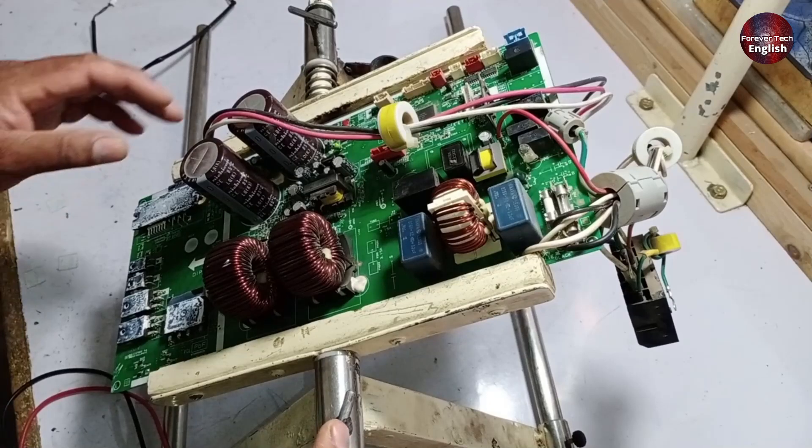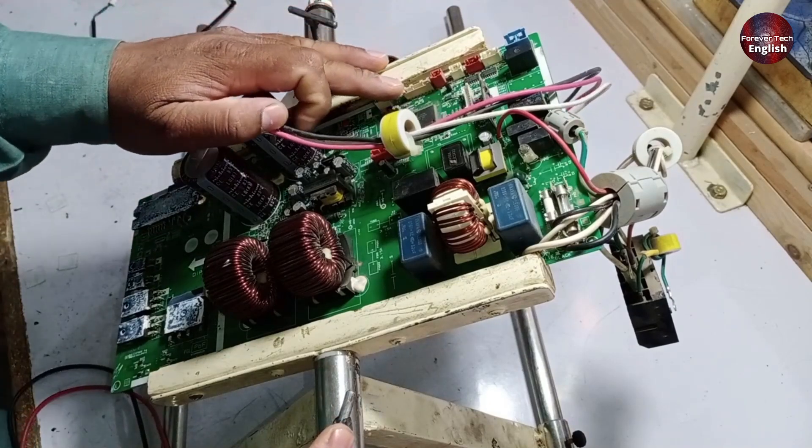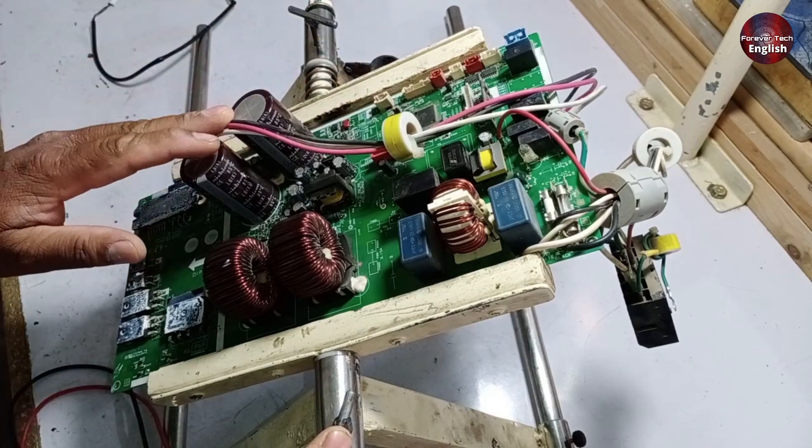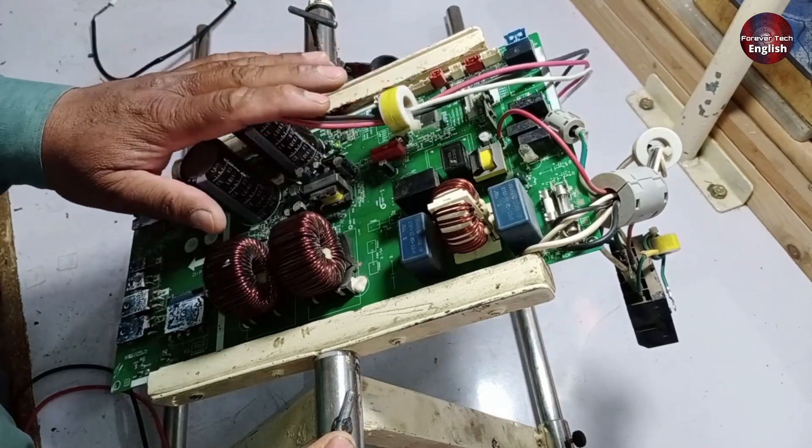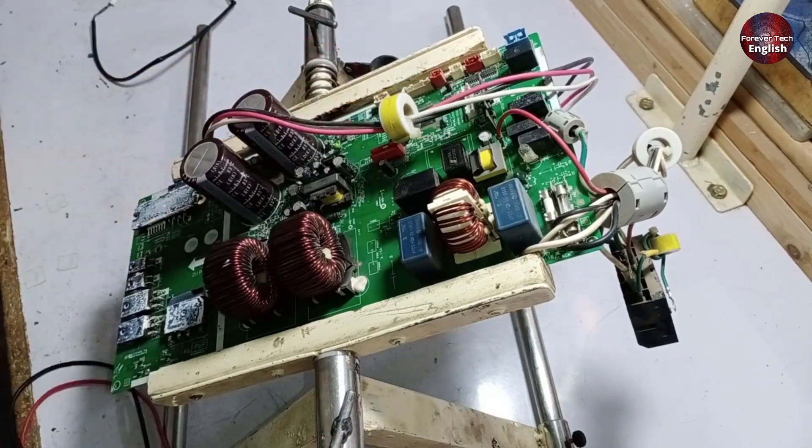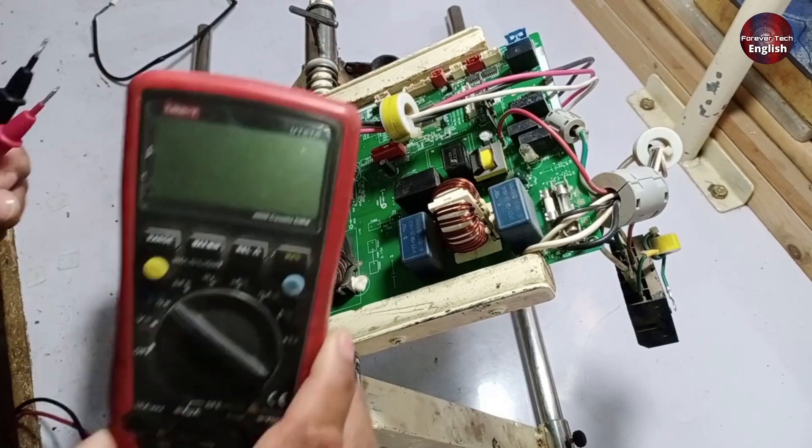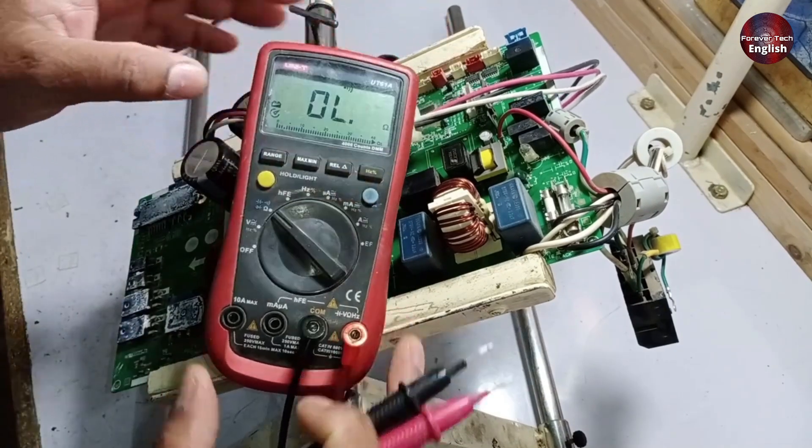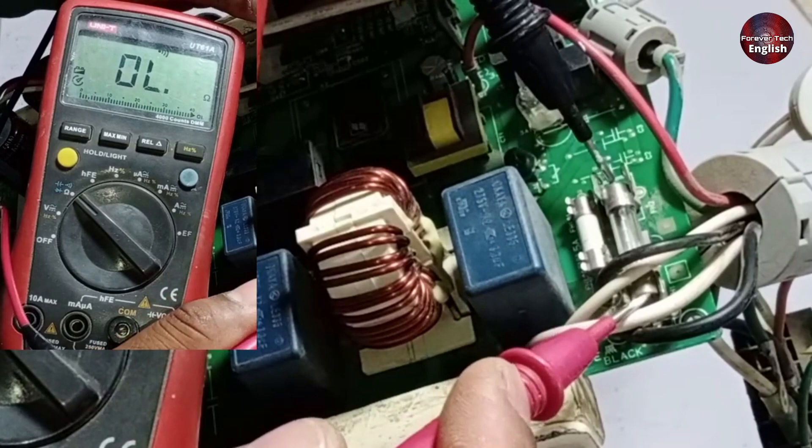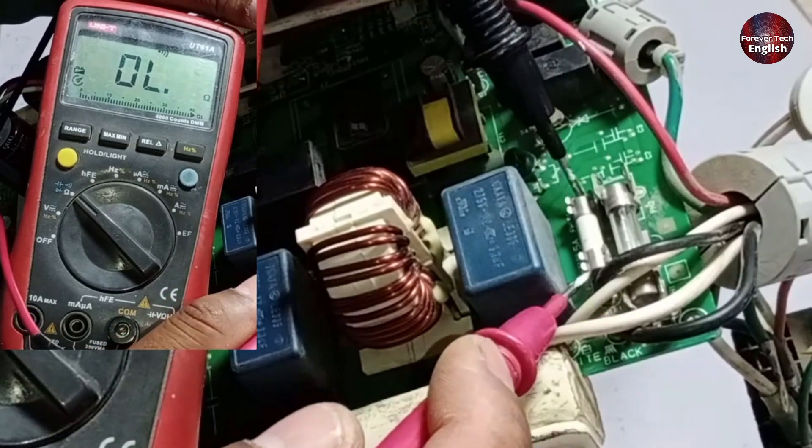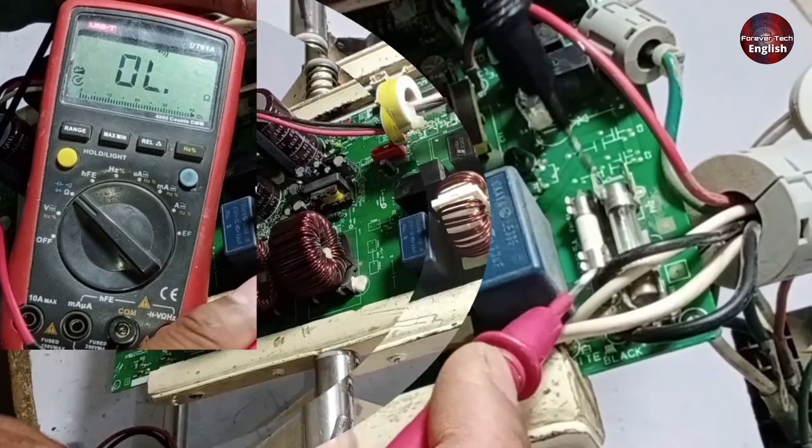Now that we have physically checked the PCB and noticed a small problem, we still need to perform proper testing because it is completely dead. The first thing to check on a dead PCB is its fuses. We will set the multimeter to continuity mode and check the fuses. The main fuse is 20 amperes, and the other one is a 5 ampere fuse, and both fuses are fine.